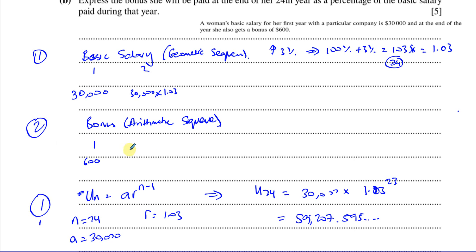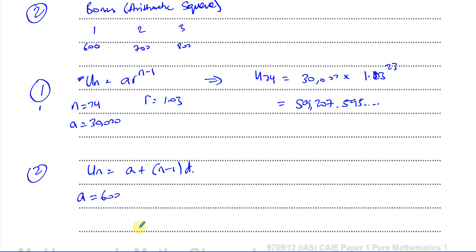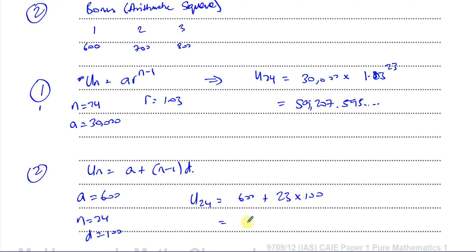Her bonus increases by $100 each year — she gets $700 at the end of year 2, $800 at year 3, and so on. This is an arithmetic series with formula U_n = A + (n−1)×d. Here A = 600, n = 24, and d = 100. So the 24th year bonus = 600 + (24−1)×100 = 600 + 2,300 = $2,900.